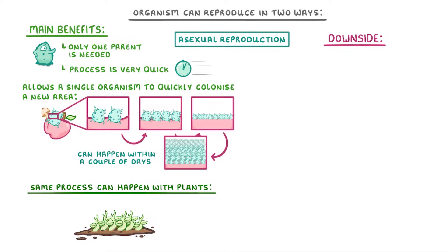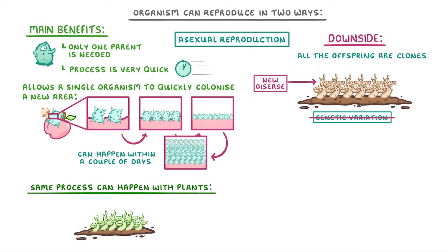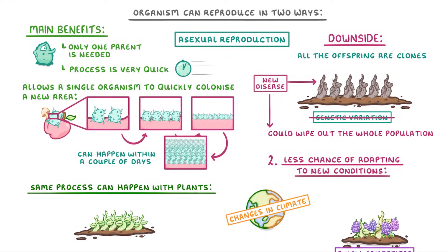Now the downside of asexual reproduction is that because all the offspring are clones, there isn't any genetic variation. This means that if a new disease comes along and one of the offspring is susceptible to it, then chances are that all of them will be susceptible, and so it could wipe out the whole population. It also means that the organisms will have less chance of adapting to new conditions, like changes in the climate or the introduction of a new competitor.